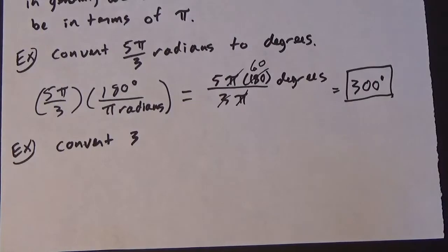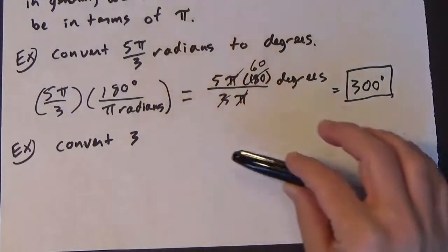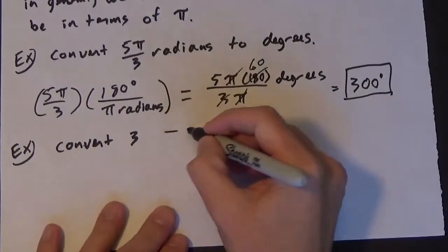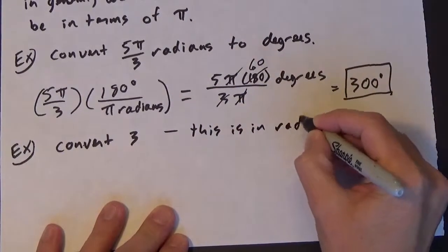So there actually are no units. Now we put radians just to kind of make sure we're clear about it. But if you see an angle measure and it has no units, it is radians. So this is in radians.